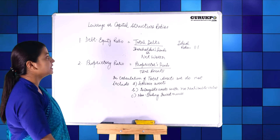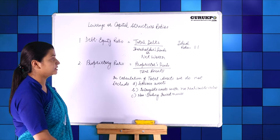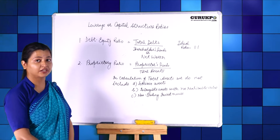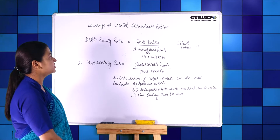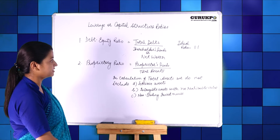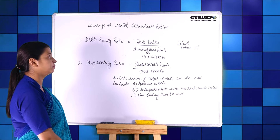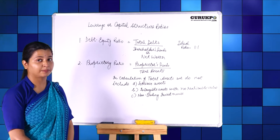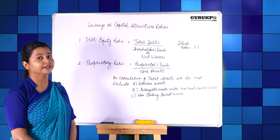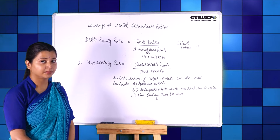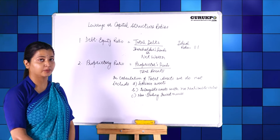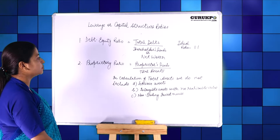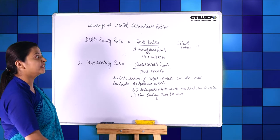The formula for debt equity ratio is total debts — meaning total liabilities of the company — divided by shareholders' funds, which is net worth. Shareholders' funds include share capital, reserves and surplus, and profit and loss account.